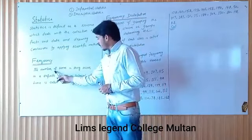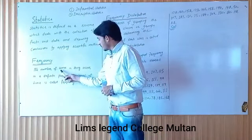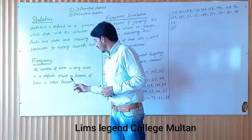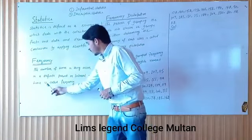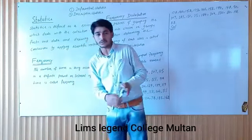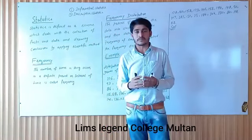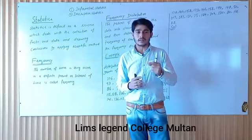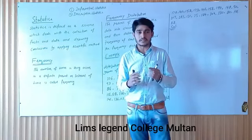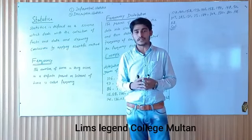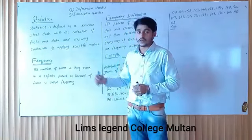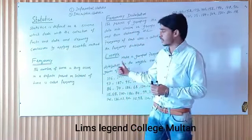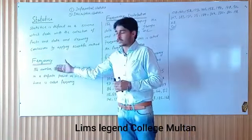Next we have frequency. What is frequency? The number of times a thing occurs in a definite period or interval of time is called frequency. In simple words, the number of data points in a class.